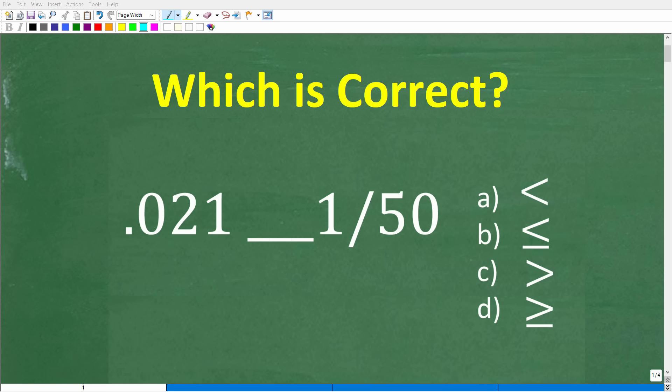Okay, so without using a calculator, let's see if you can figure out the answer to this simple inequality question. We're comparing two numbers here. We have 0.021 and the fraction 1 over 50. And what we want to do is select an inequality symbol out of these for these two numbers.